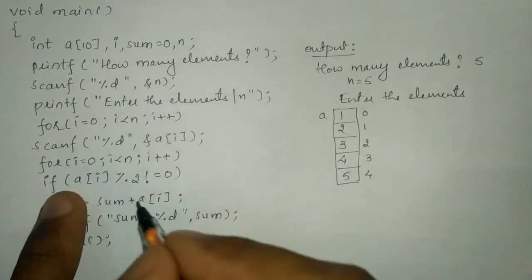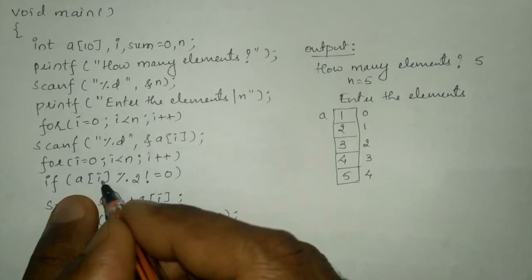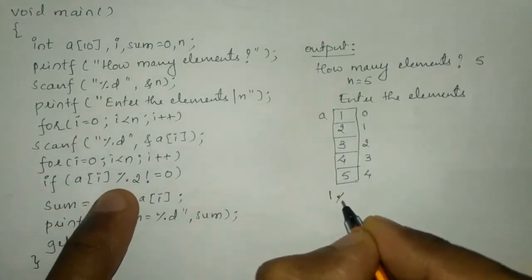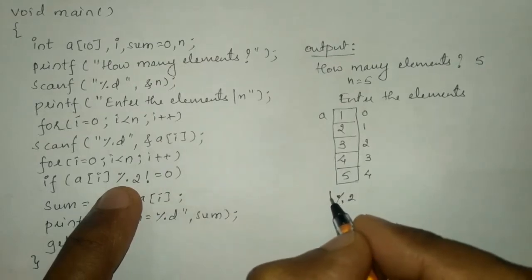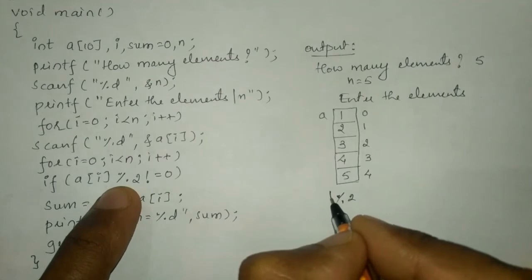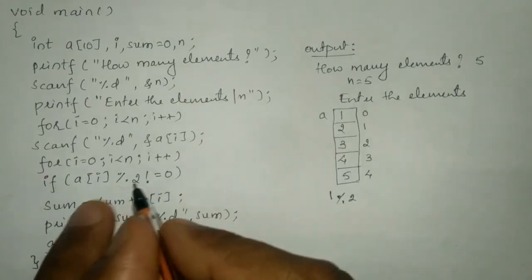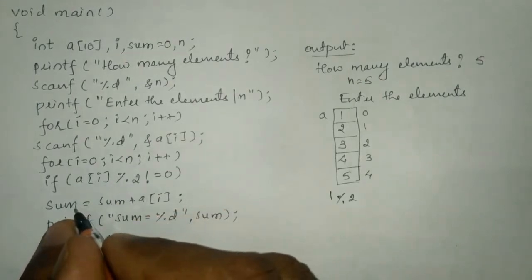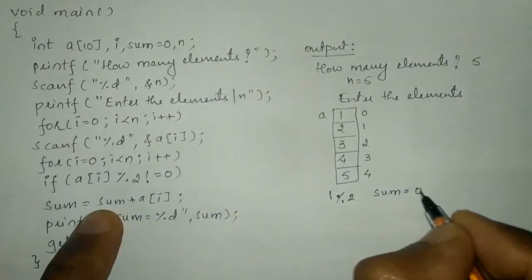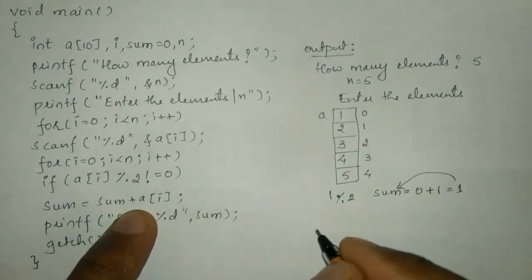Now we check each block to see if the number is divisible by 2 or not using the for loop. For i equal to 0 the first time, in the if condition we write a of i modulo 2 not equal to 0. So a of 0 contains 1; 1 modulo 2 — since 1 is less than the denominator, 1 becomes the remainder which is not equal to 0, so the condition is true. It executes sum equals sum plus a of 0: 0 plus 1 is 1, stored in sum.